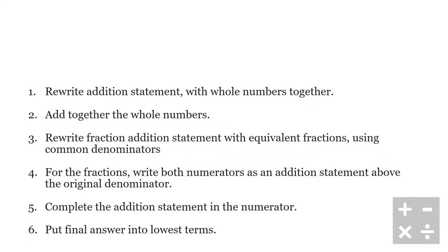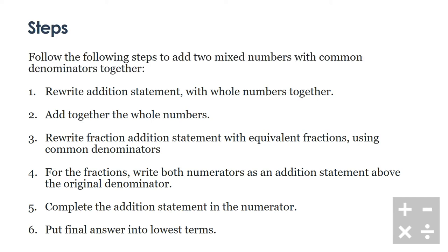Let's quickly summarize the steps. I accidentally put 'common', I meant to put 'different' in here—I apologize for that. So follow the following steps to add two mixed numbers with different denominators together. First things first, rewrite the addition statement with the whole numbers together. Secondly, you're going to add those whole numbers together. Third, you're going to rewrite the fraction addition statements with equivalent fractions using common denominators. This is where our knowledge of common denominators comes into play.